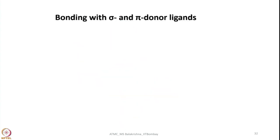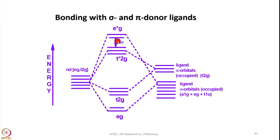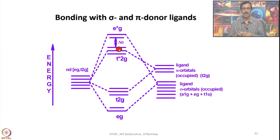Now let us look into ligands having both sigma donor and pi donor properties. In this case — as I told you in my previous lecture — ligands have low-energy filled sigma orbitals and low-energy filled pi orbitals. When they interact with metal atomic orbitals to generate molecular orbitals, this gap between t2g and eg shrinks. This is exactly what happens in the case of metal chlorides and fluorides. Relatively, these compounds are less stable compared to pure sigma donor ligands.